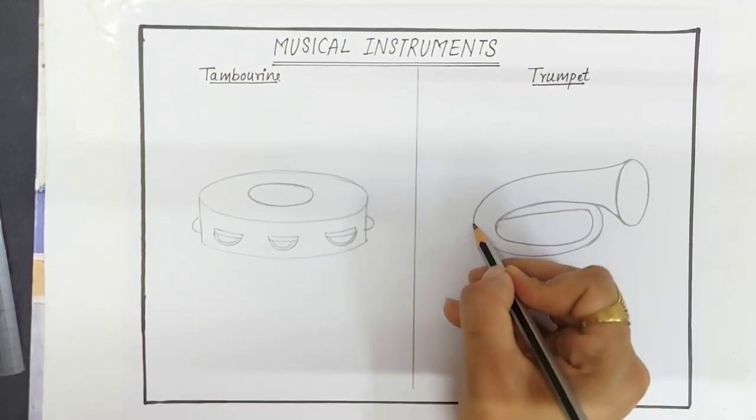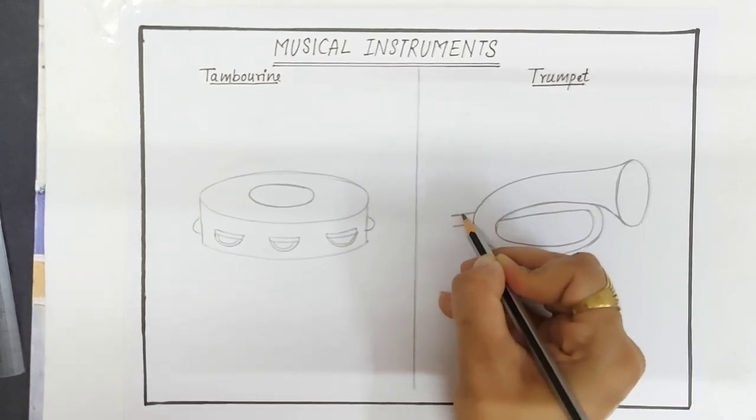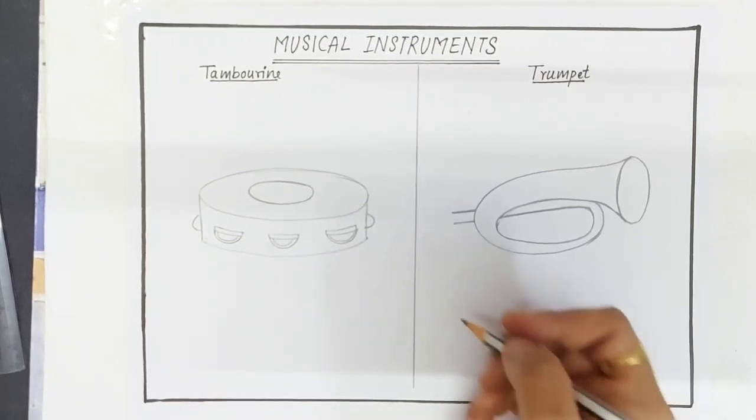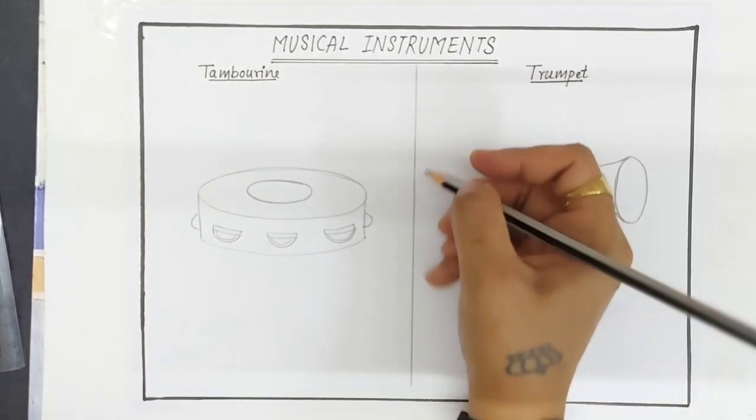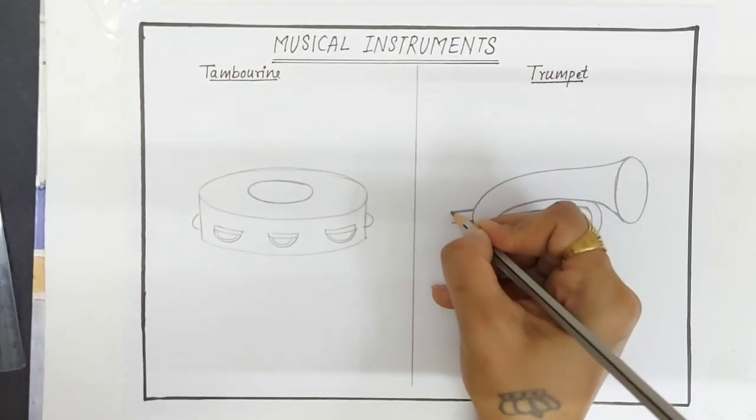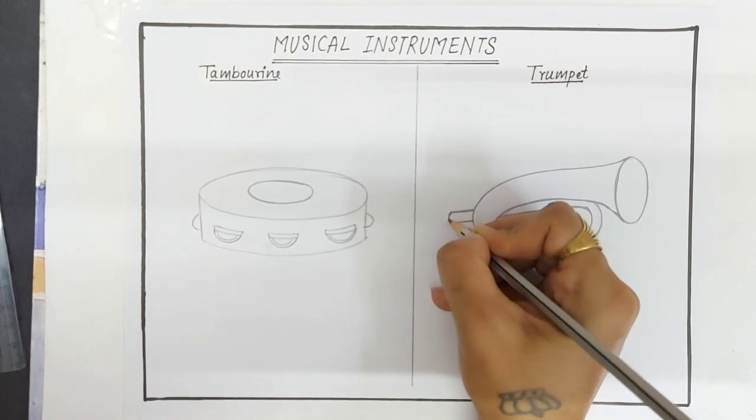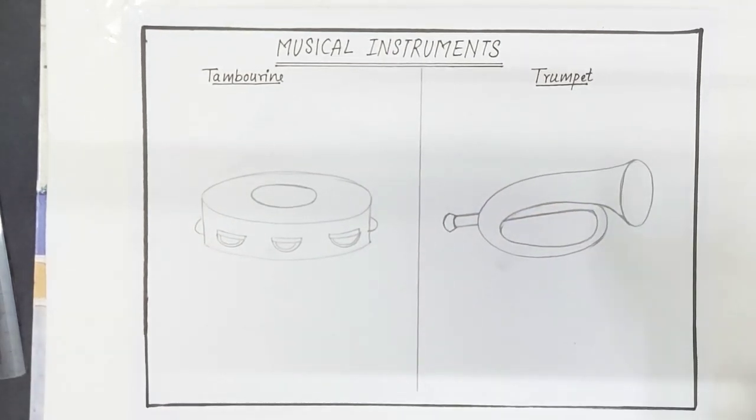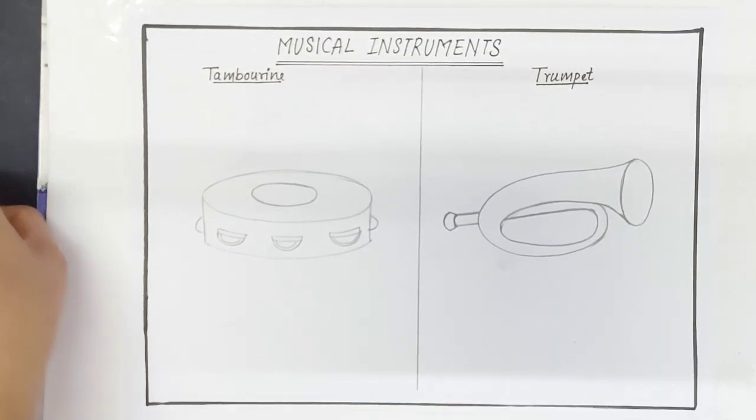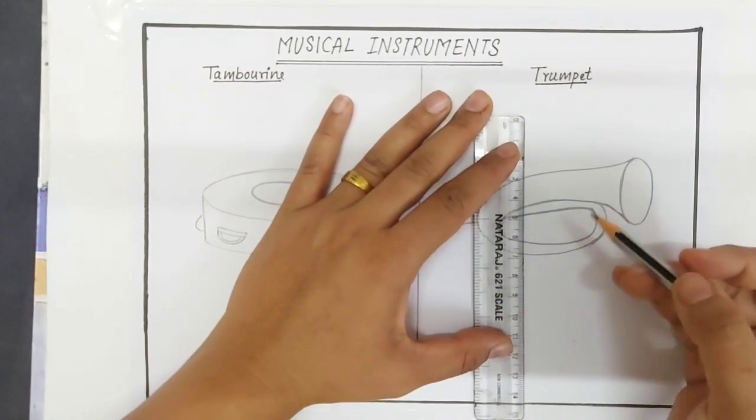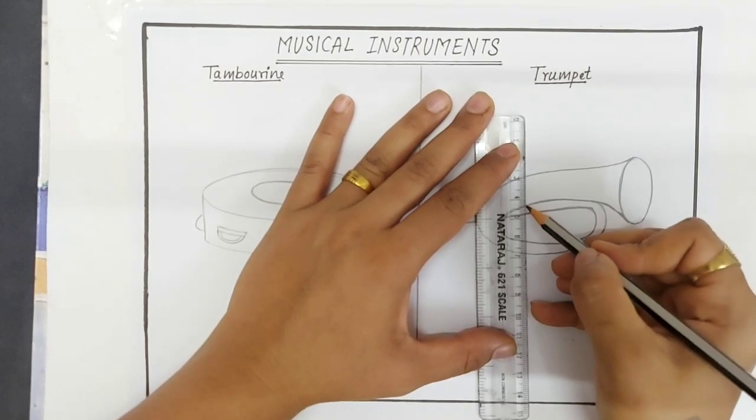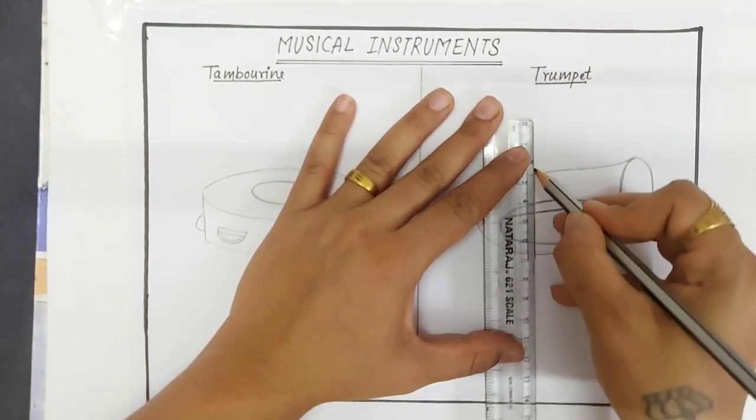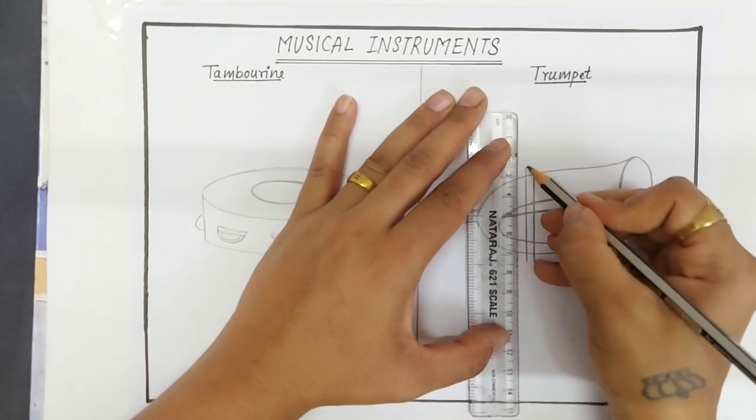Again extend this line. At the bottom draw two curved lines like this. Draw a pair of straight lines that cross the middle of the trumpet like this. And join the bottom like this.